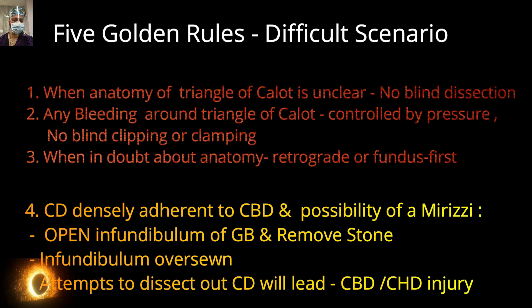Rule two: any bleeding around the triangle of Calot should be controlled by pressure — not by blind clipping, clamping, or cautery. Just apply a gauze and keep pressing the bleeding point for eight to ten minutes and most bleeding will stop. Rule three: when in doubt about anatomy, adopt the retrograde or fundus-first method.